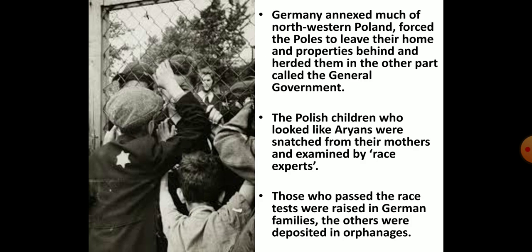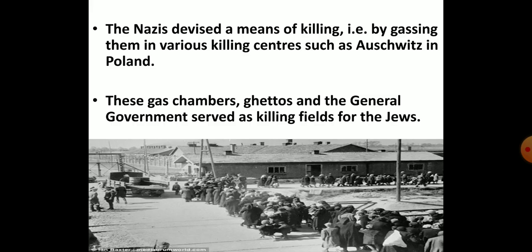A large area of northwestern Poland was occupied by Germany. Poles were forced to leave their homes and properties behind. They were then packed off to the destination area of undesirables of the empire, called the general government. The intellectual Poles were murdered in order to keep the other Poles as slaves. Polish children having Aryan looks were snatched from their mothers, examined by race experts, and if they passed the race test, they were brought up in German families; else they were deposited in orphanages where most of those children perished. Nazis devised a means of killing by gassing people in various killing centres like Auschwitz in Poland. Gas chambers, ghettos and the general government were the killing fields for the Jews.